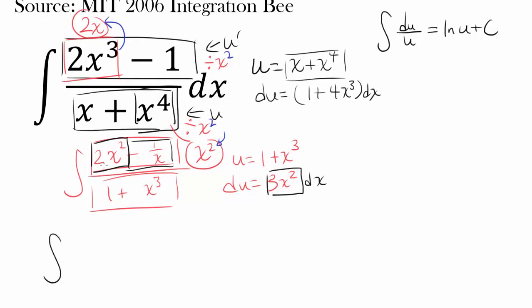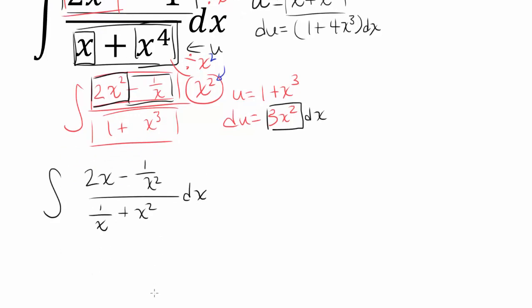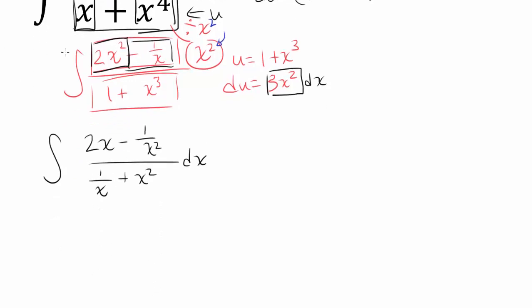Dividing both sides by x squared gets you 2x minus 1 over x squared, divided by 1 over x plus x squared, dx. And something marvelous has happened. When you differentiate x squared, we get 2x — as we wanted. That was the entire point of dividing by x squared: to force this relationship to occur.